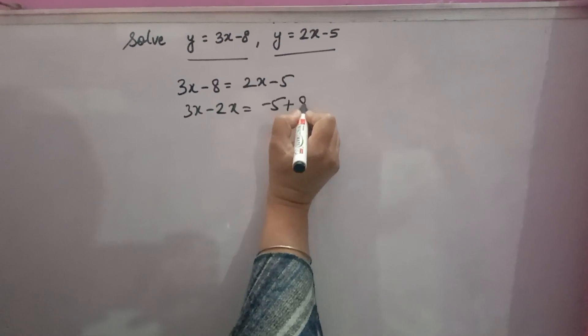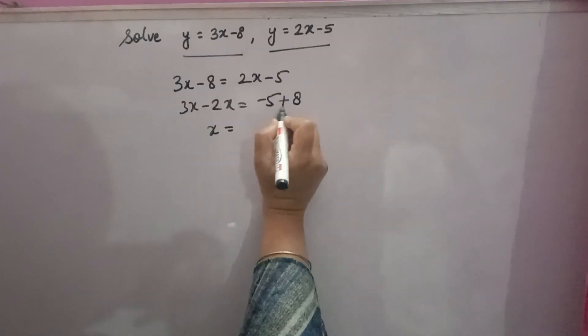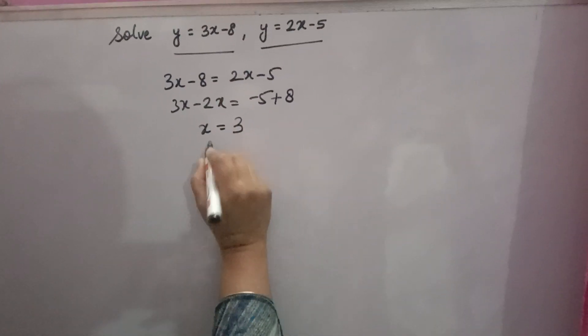Minus 8 will go that side, it will become plus 8. 3x minus 2x is x. So you can subtract and sign of bigger, so 3 will be the answer. So x is equal to 3.